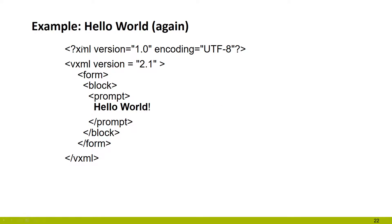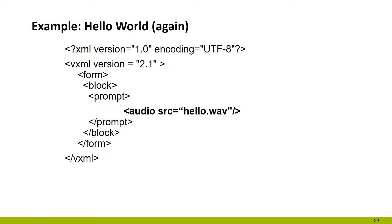Looking at the Hello World example again: we see the form element, and within it a block — a grouping of elements — and then a prompt, which means use text-to-speech to pronounce this. Depending on the server, you can select whether you want a male or female voice, American, British, or French pronunciation. That's all handled by the specific text-to-speech engine of the server.